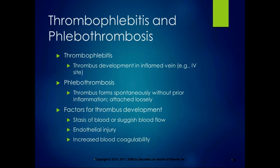The factors for thrombus development include stasis of blood flow or sluggish blood flow. When we talked about the consequences of immobility, this could be one of them — you get stasis of blood when you're not moving around. Endothelial injury on the insides of the veins can also cause you to develop a thrombus, because platelets are sticky and they might stick to it and start to form a clot.